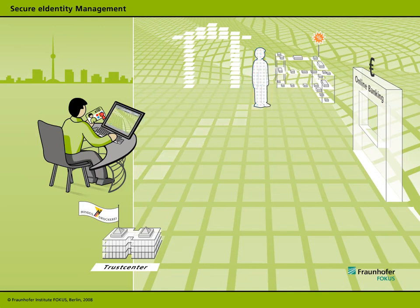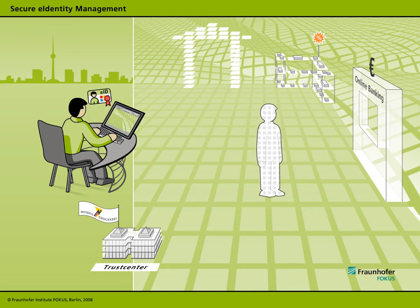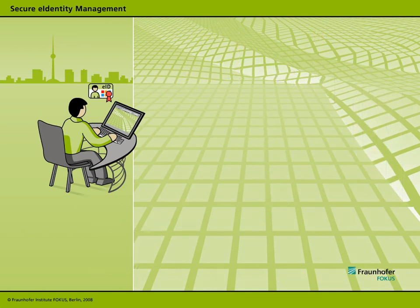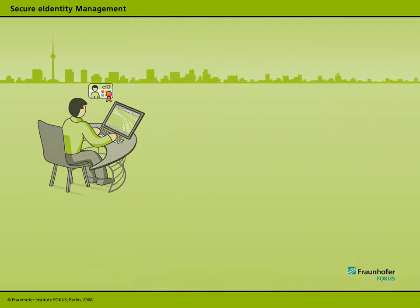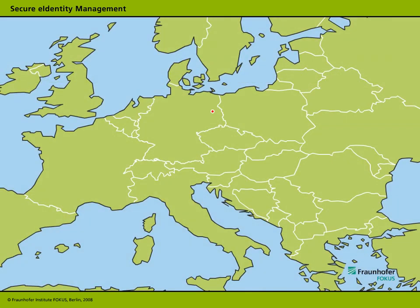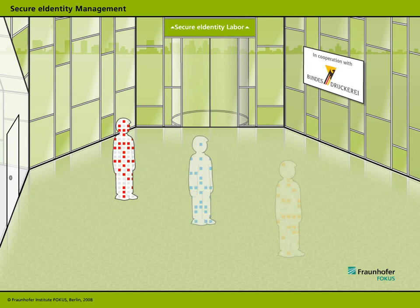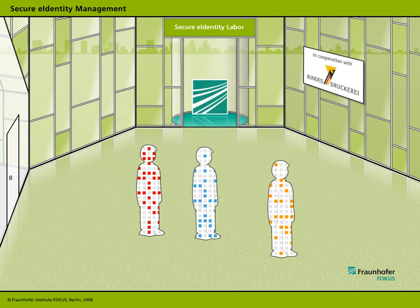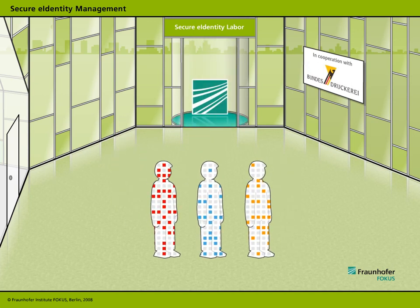In terms of identities in a virtual world, the key challenges lie in building secure, user-oriented, and cross-organizational architectures for the management and protection of personal data. These are the challenges now being taken up by the Secure e-Identity Lab, co-founded by Fraunhofer Focus and Bundesdruckerei.